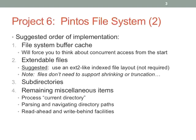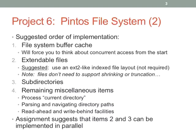Subdirectories — you need to support that. Then remaining miscellaneous items is what they say you should do last. My guess is: updating the current directory of a process, navigating directory paths from the directory hierarchy, and also read ahead and write behind — which I'll basically tell you how to implement, because there's a really simple solution that 85% of teams instantly identify. The assignment suggests you can implement steps two and three in parallel, which is probably true.